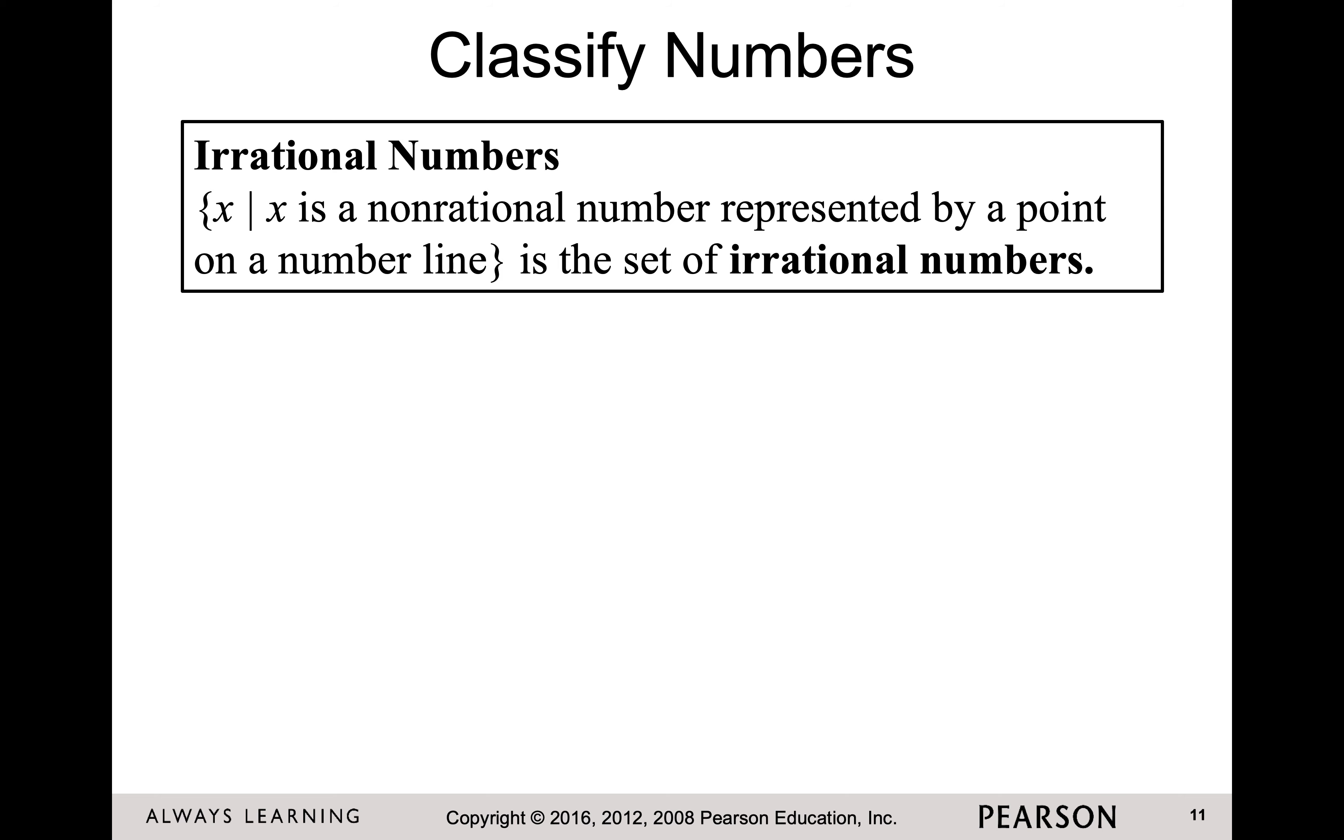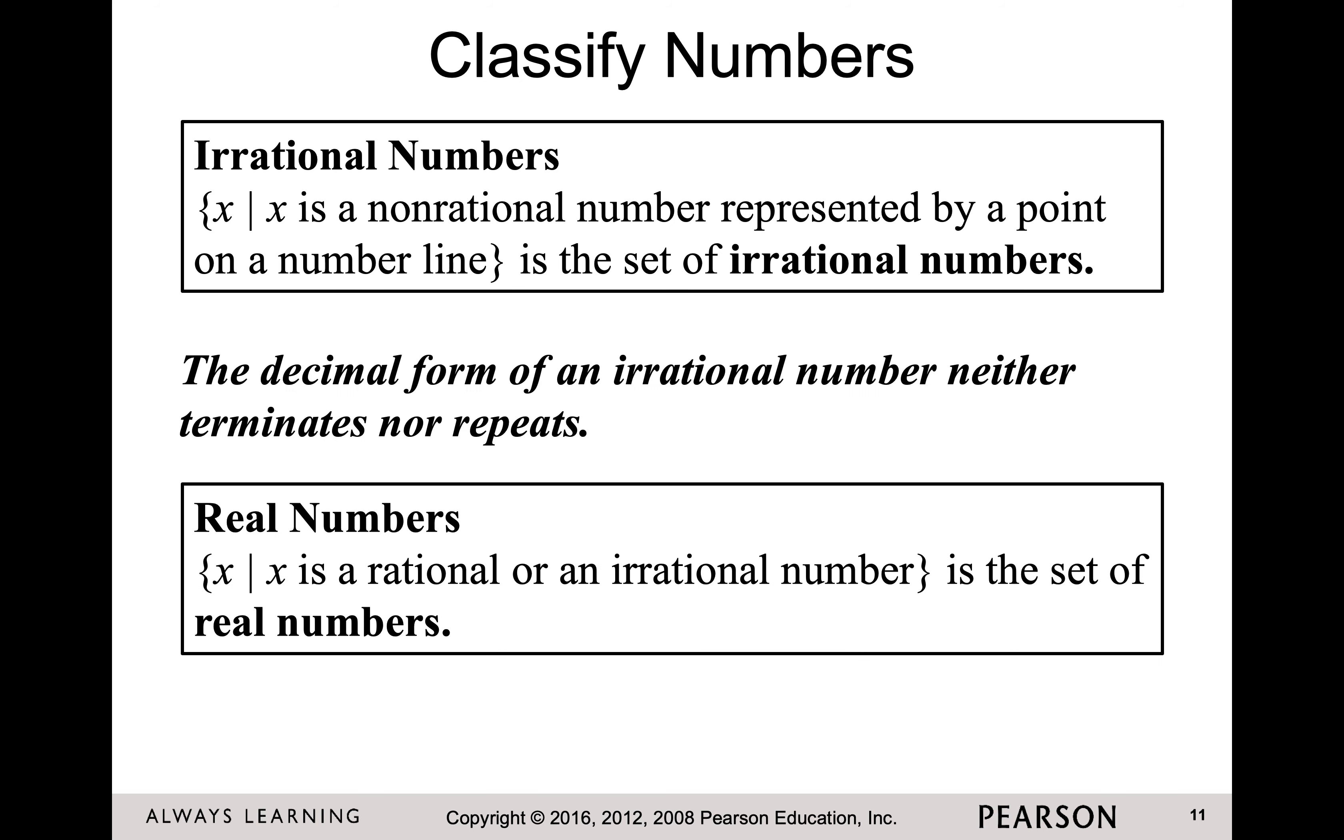Irrational numbers are numbers that cannot be written as a fraction. So they're not unrational, they're irrational. Most of these values that are irrational are going to be things like pi. Pi is a never-ending decimal. It doesn't repeat. I can't write pi as a fraction. So I can't write it as an exact value as a fraction. So it's irrational. There are not going to be many irrational numbers.